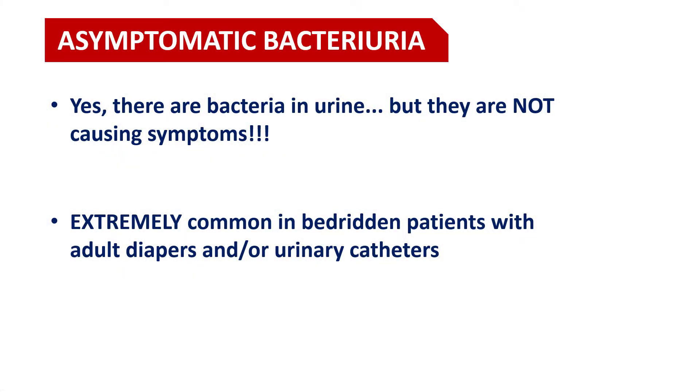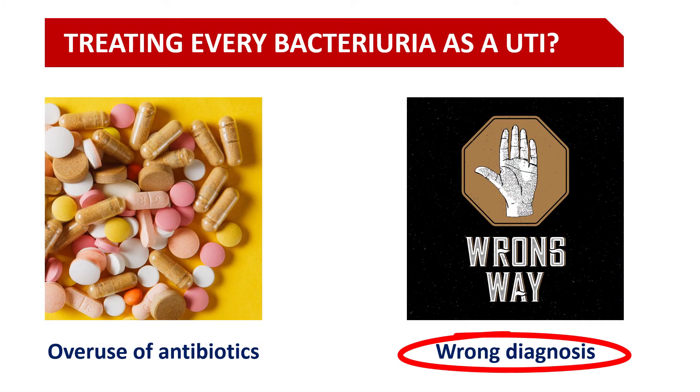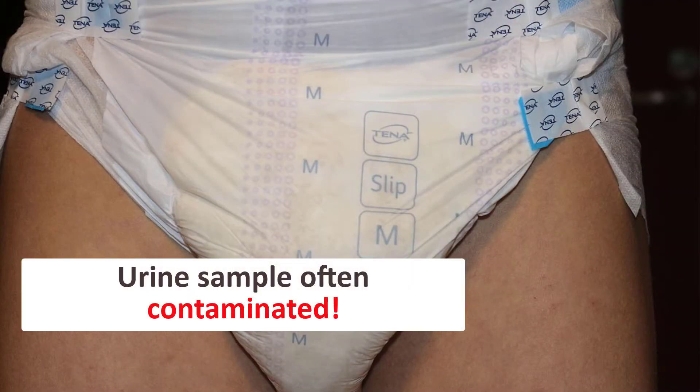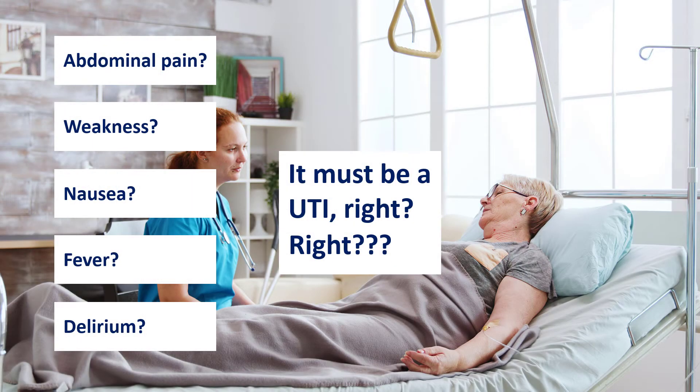Once again, imagine an elderly patient with fever and delirium. You take a urine sample, find bacteria or leukocytes, and start treatment for a UTI — when the patient actually has bacterial meningitis, endocarditis, bowel ischemia, or who knows what. This is not an imaginary story; I've seen this happen time and time again. And this is not the only problem. In elderly, especially immobile patients with diapers, it is extremely difficult to obtain a high-quality, uncontaminated urine sample. In these patients, urinalysis becomes much less reliable, and a urinary tract infection basically becomes a diagnosis of exclusion.